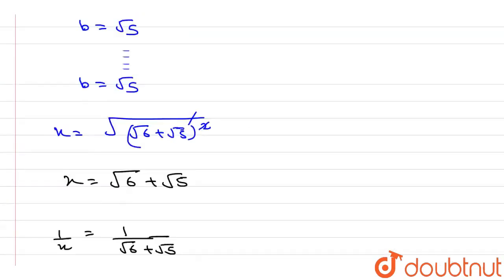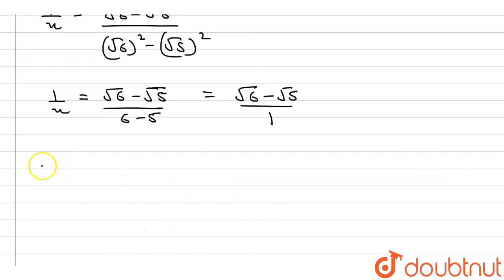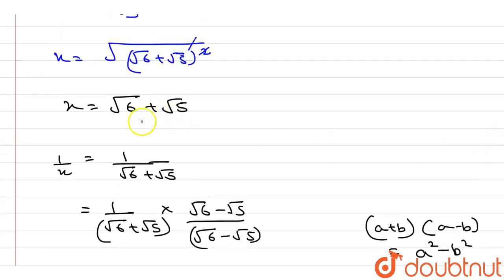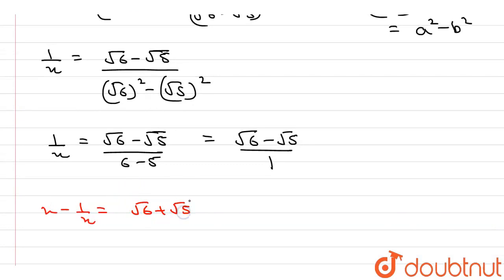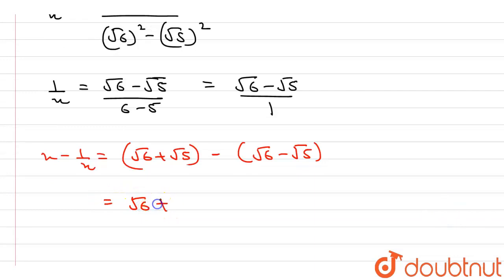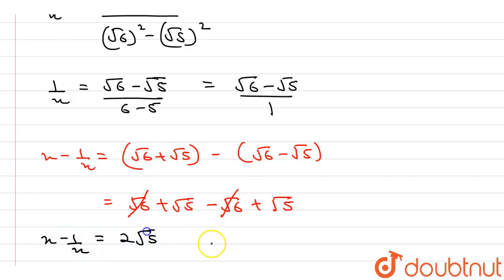Now we need to find the value of x minus 1 by x. We found x equals root 6 plus root 5, and 1 by x equals root 6 minus root 5. So x minus 1 by x equals (root 6 plus root 5) minus (root 6 minus root 5). The root 6 terms cancel out, so we get x minus 1 by x equals 2 root 5. This is the answer. Thank you.